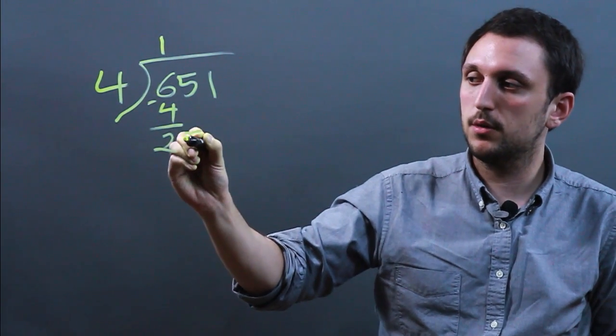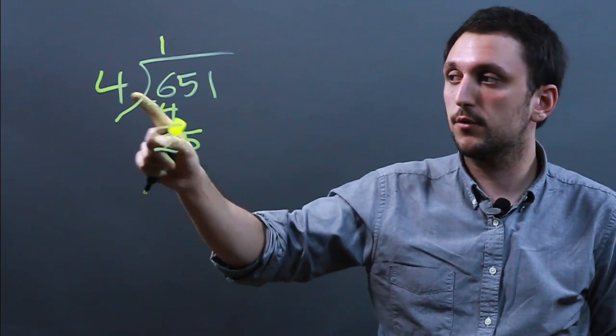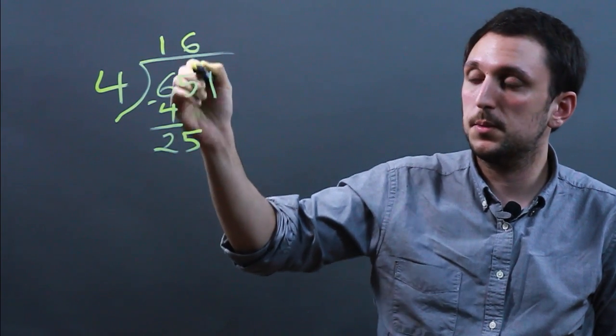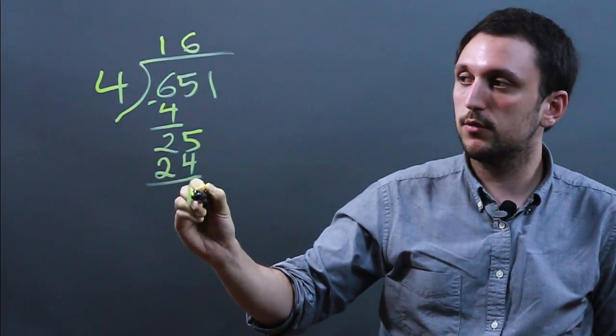So we have to drop this 5 down and 4 goes into 25 six times because 4 times 6 is 24. So we put a 6 up here and then 24 and we subtract which leaves us with 1.